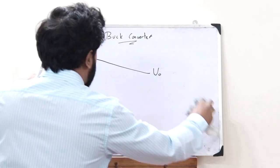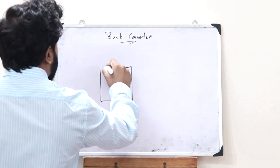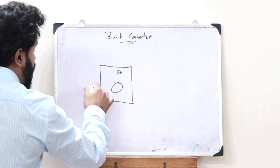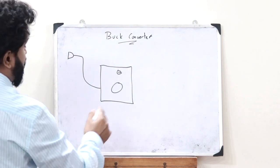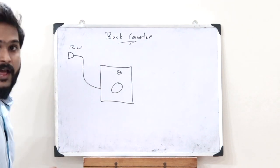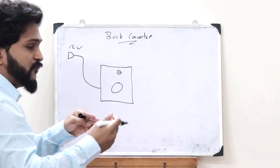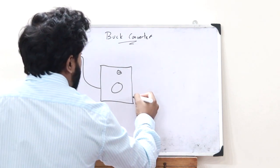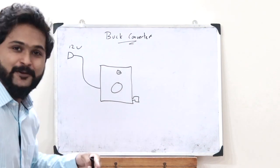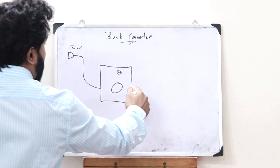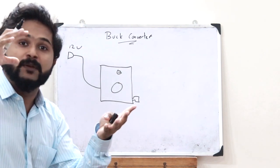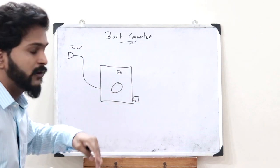Let me state an example. Let us assume we have a speaker system connected to a 12-volt adapter, so whatever voltage comes inside is 12 volts. Now, to give an input to the speaker we also need to connect a USB device. But if this 12 volts is supplied directly to the USB device, it will burst — it will get destroyed. So the voltage must be reduced before being supplied to the USB device.